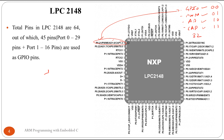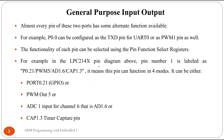Port 0 has 32 pins. Since each pin requires two bits, we need 64 bits total for port 0, which means two 32-bit registers are required. For port 1 we require one 32-bit register. So in total, we require three registers to select the functionality of the different port pins. Almost every pin of these two ports has some alternate function — for example, p0.0 can be configured as a TXD pin or as a PWM1 pin.